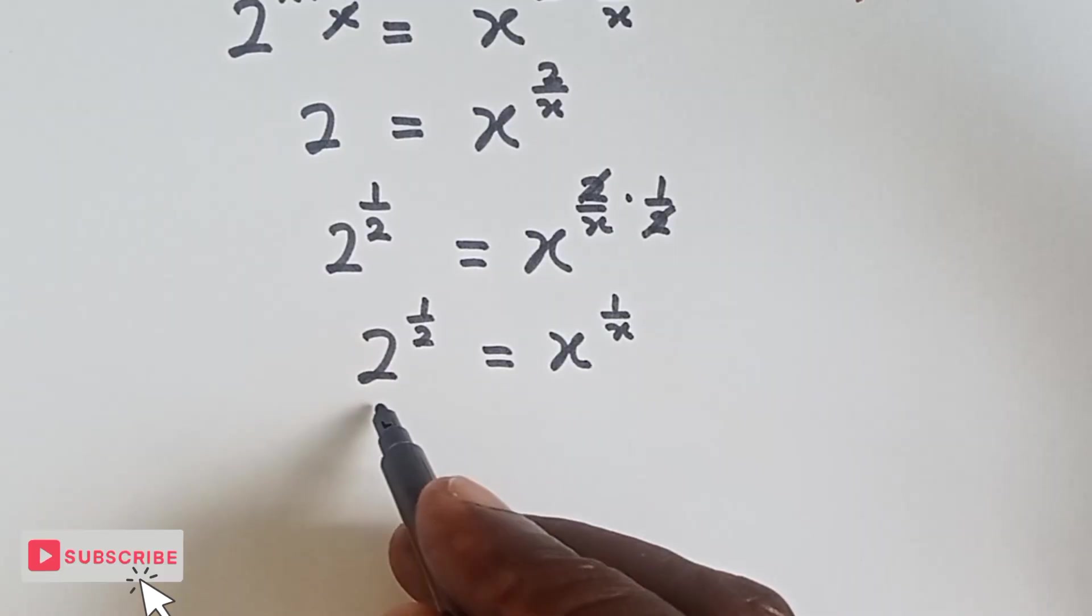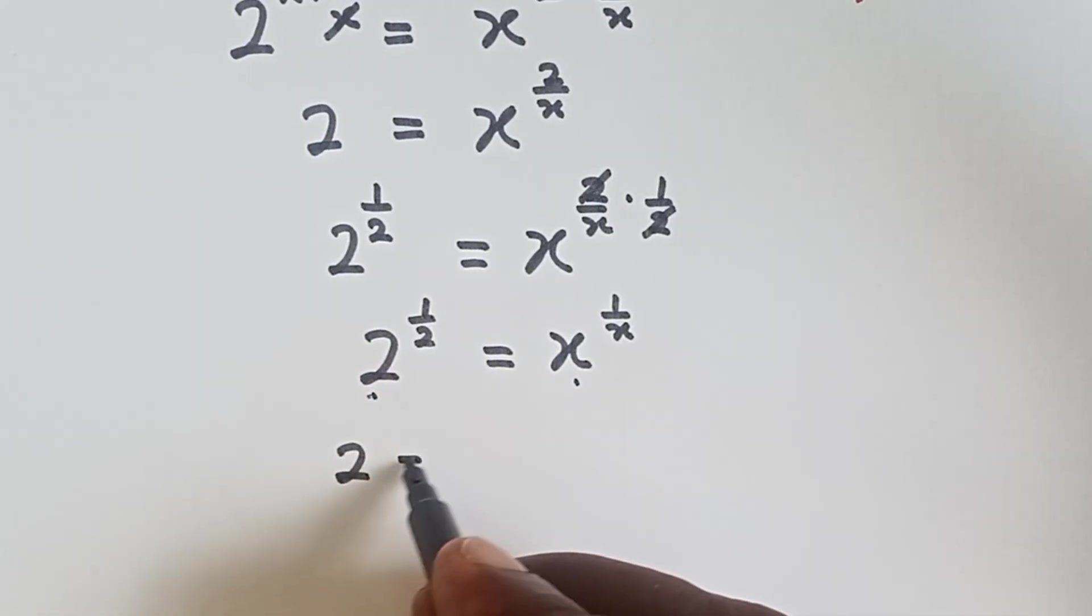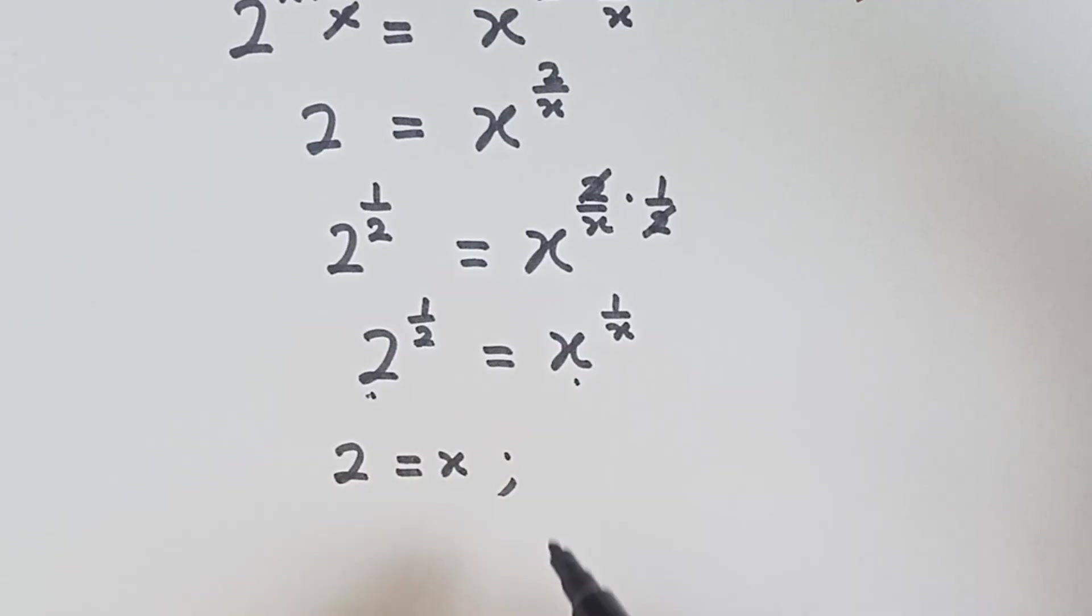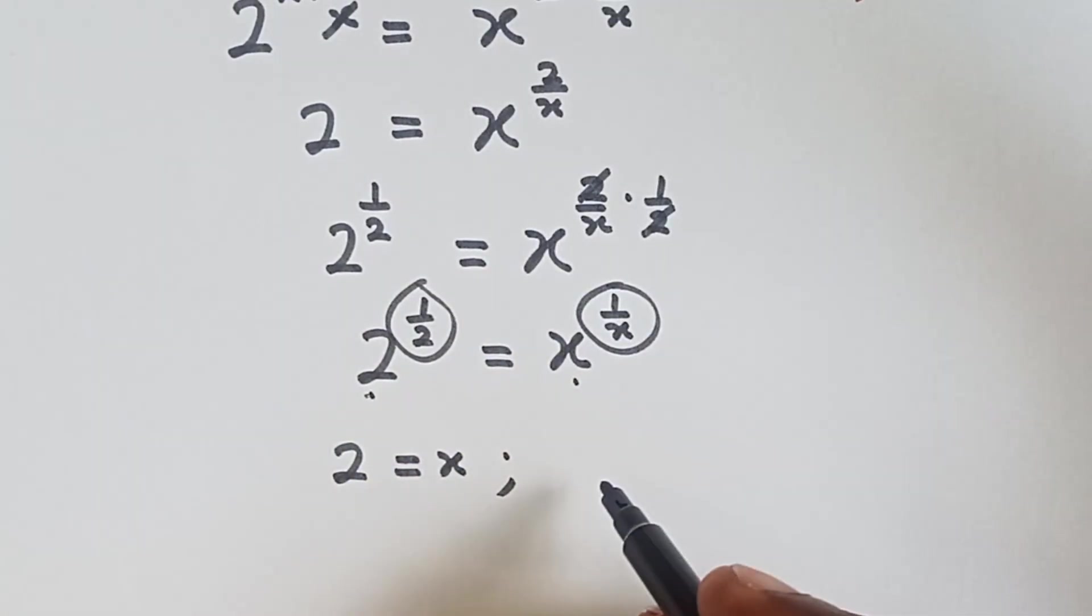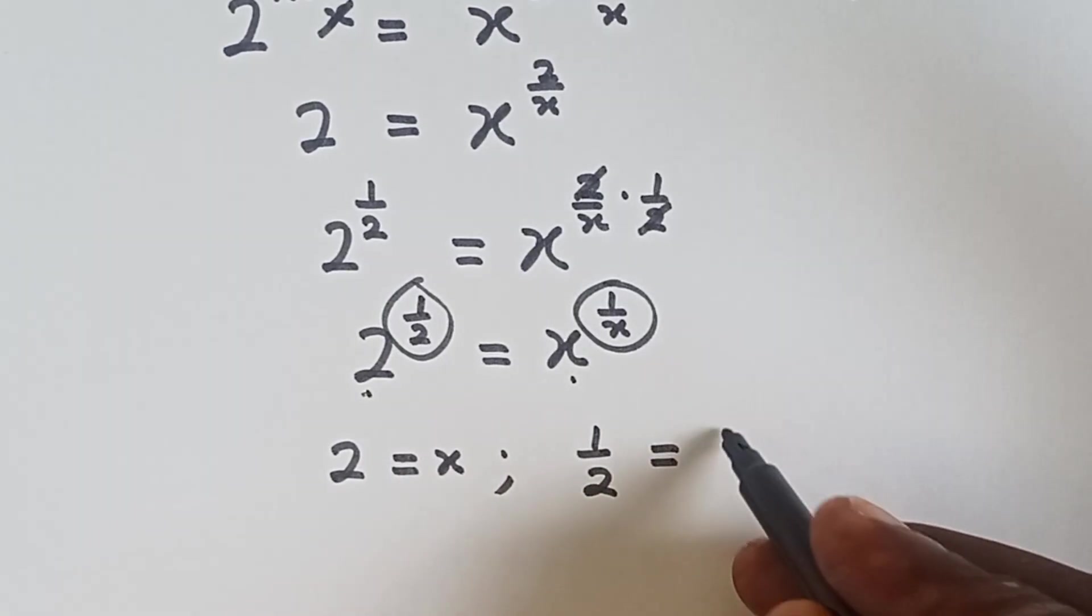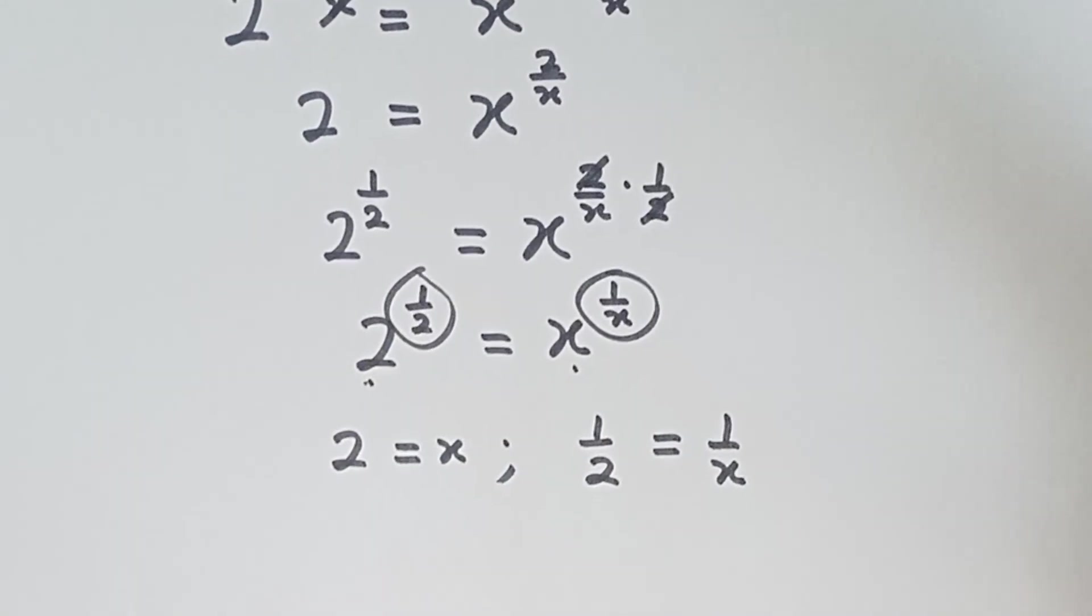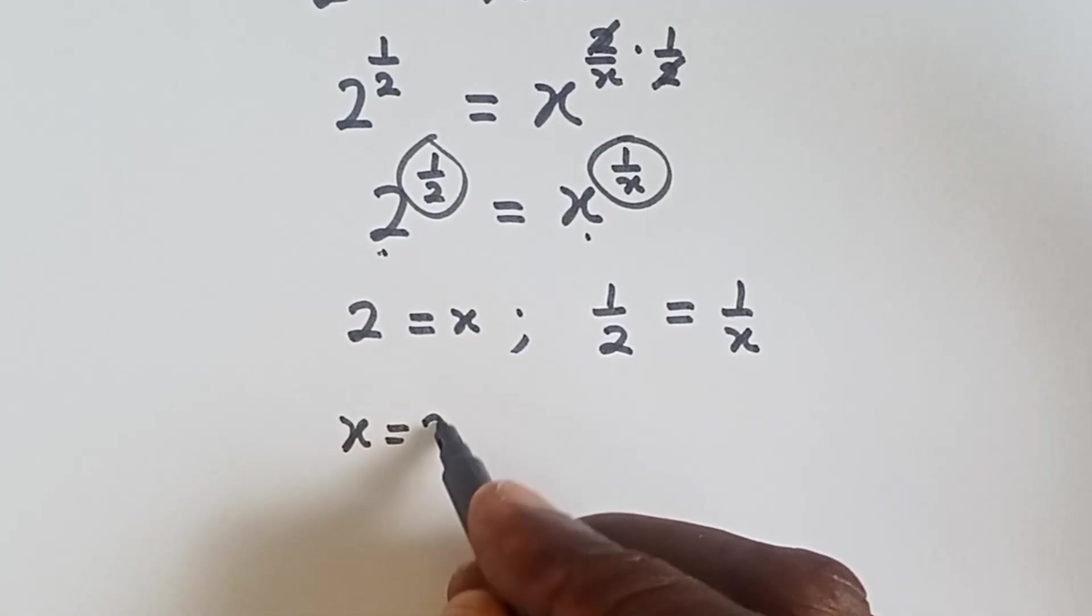Okay, so when we equate the bases, we have 2 and x as the bases and then we say 2 is equals to x and also we can equate the powers. We have 1 over 2 and 1 over x as the powers. So we say 1 over 2 equals to 1 over x. Now 2 equals to x, same thing as x equals to 2.